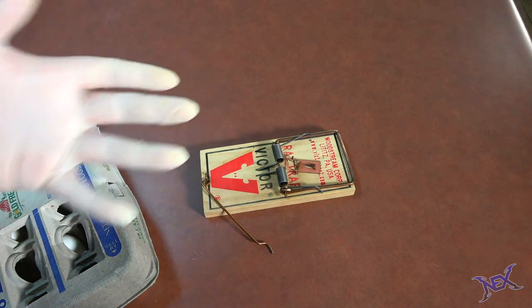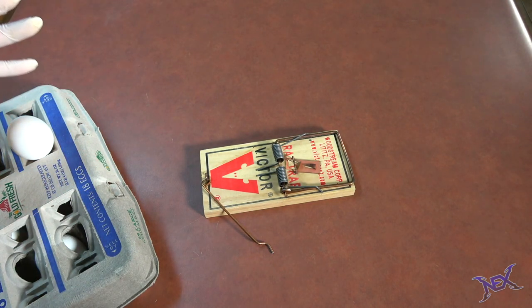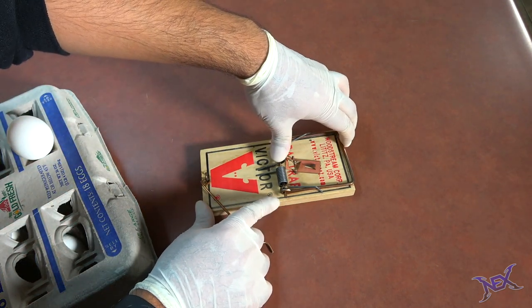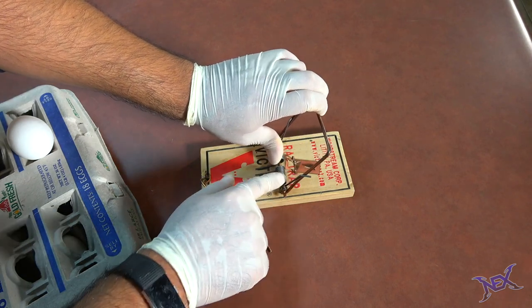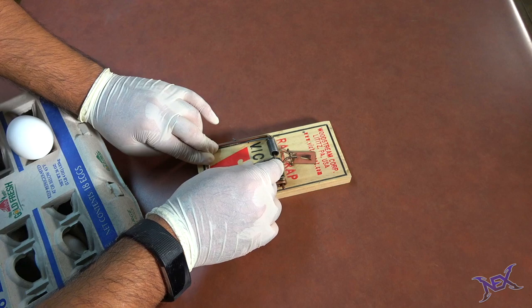All right, so you guys all know how to set up a mousetrap, right? It's pretty much the same thing with every single one of them, although sometimes the mechanism is different. But for this one, one of the most basic ones, you pull back the snapper which has the springs, pull it back, and then with this rod you're gonna hold it in place and...